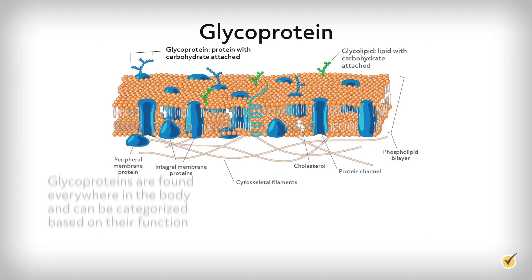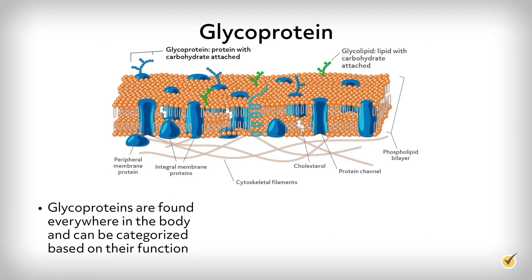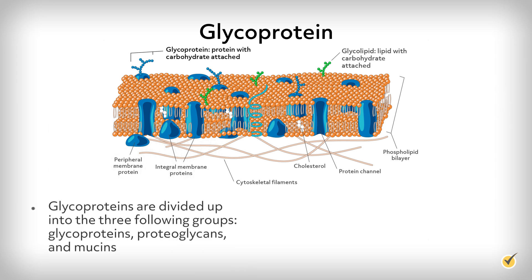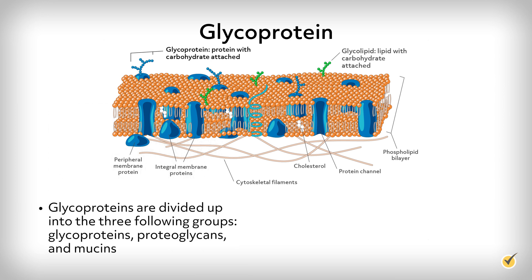Carbohydrates aren't limited to bonding just with one another. In fact, a lot of carbohydrates don't exist solely on their own, but instead form molecules called glycoproteins. Glycoproteins are found everywhere in the body and can be categorized based on their function. This dynamic duo is what gives our cells the ability to communicate with each other, gives our body a functioning immune system, and provides cushioning and support throughout. Glycoproteins are divided up into three groups: glycoproteins, proteoglycans, and mucins.